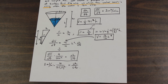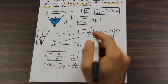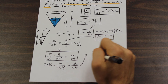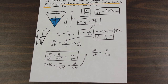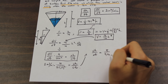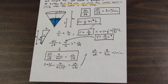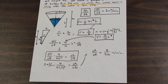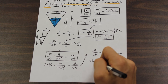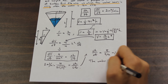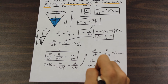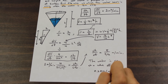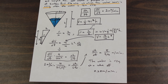Plugging in H = 3 and DV/DT = 2, we get DH/DT = 8/(9π). That's perfectly fine to leave in that form on an exam since you won't have a calculator in calculus. If you do calculate it, the water is rising at approximately 0.28 meters per minute.